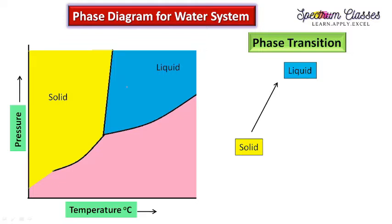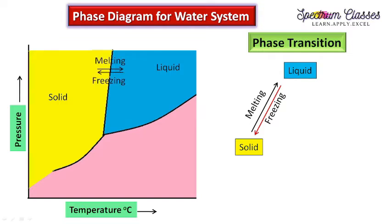Talking about the equilibrium existing between the solid and liquid phases: conversion from solid to liquid on changing temperature and pressure is called melting, and from liquid to solid it is called freezing. Along this line in the phase diagram there is an equilibrium between the solid and the liquid phase.